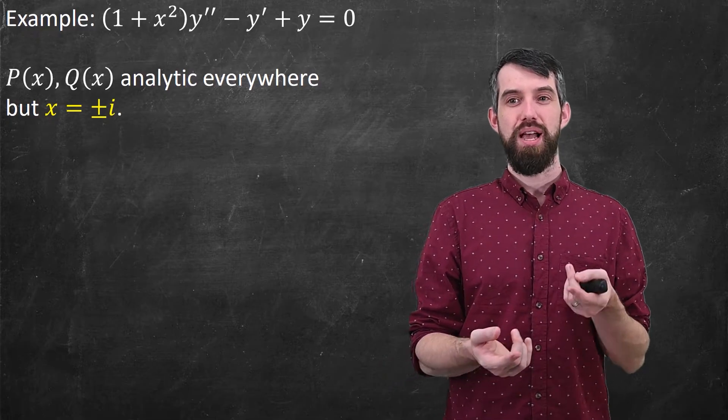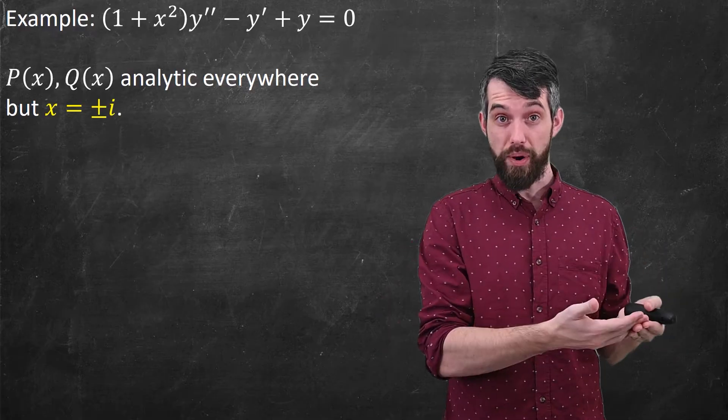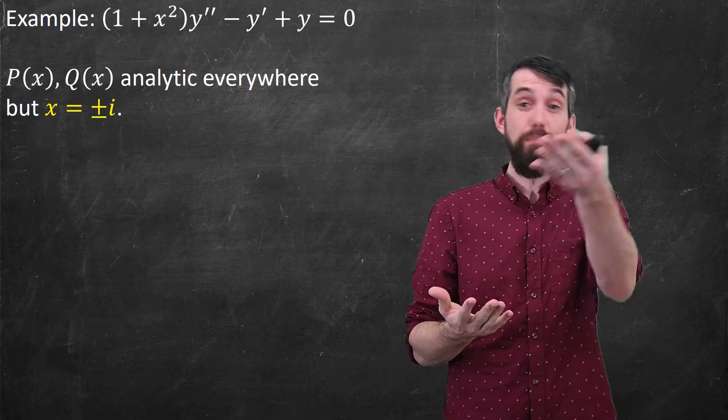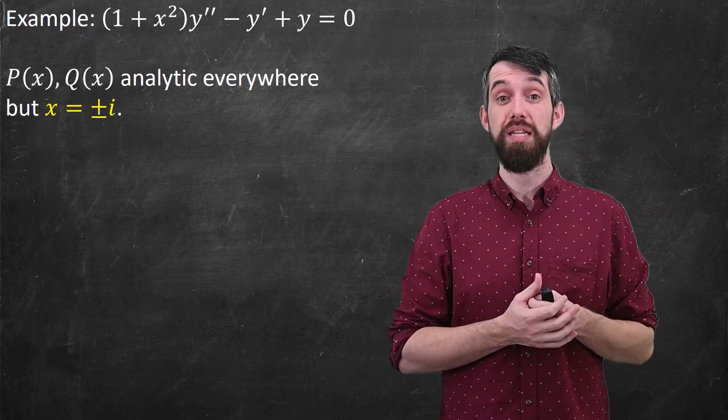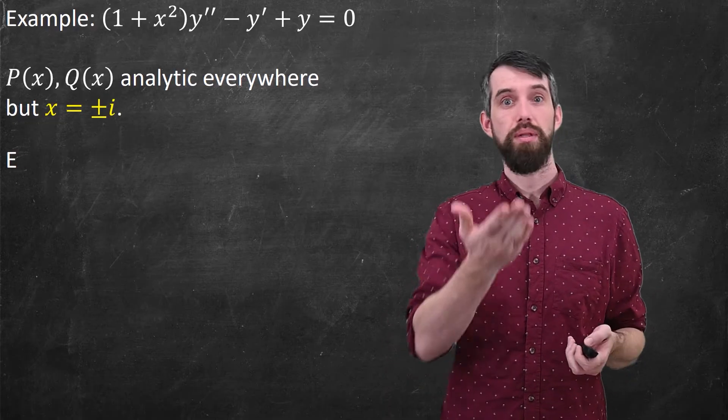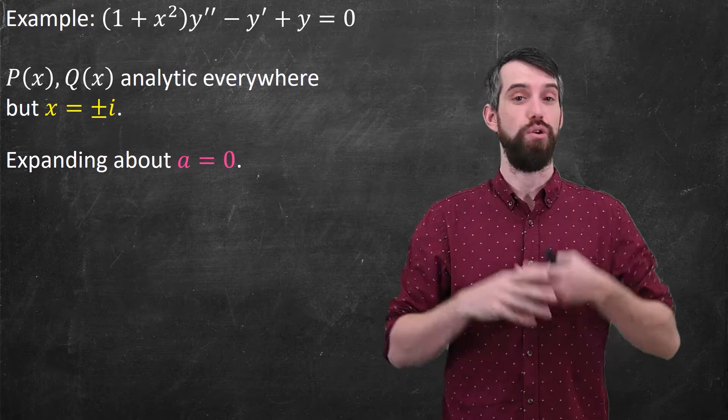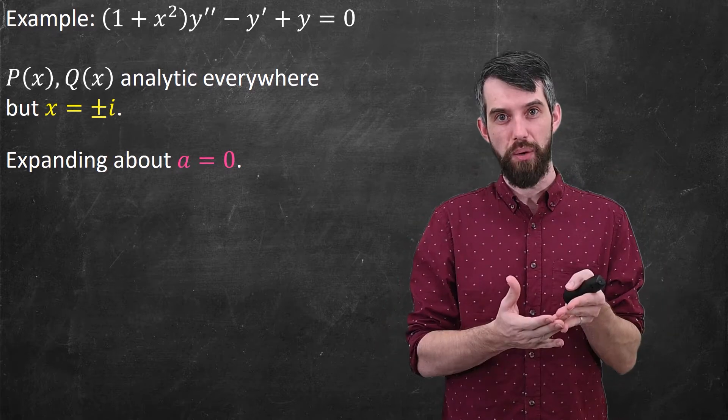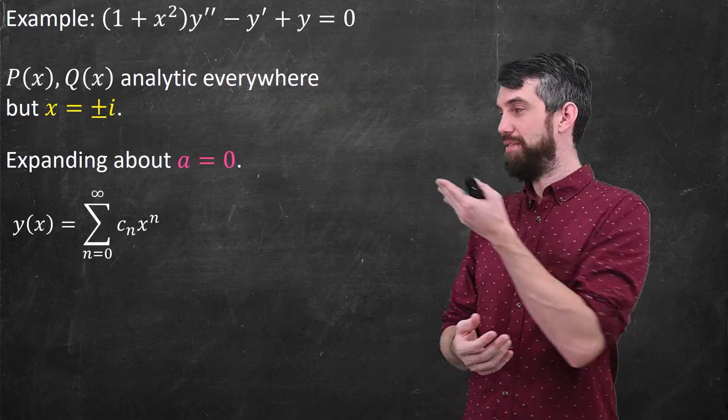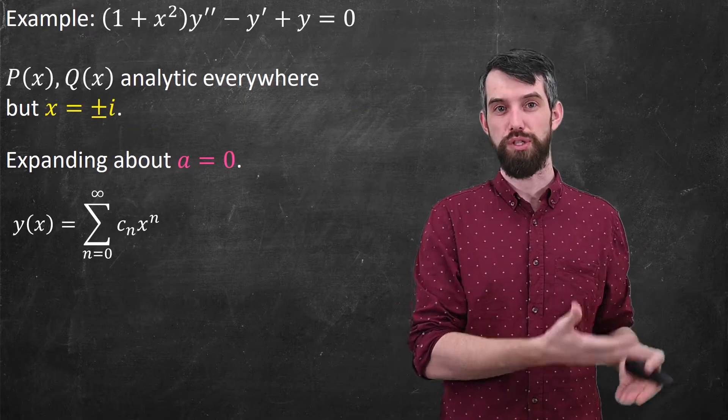So notice here that I'm allowing complex numbers. That is, my singular points could be complex values. They might be real numbers as well, in which case it's a little bit easier to deal with, but they could be complex as in this case. Okay, so let me try to expand about a equal to 0. So I'm not looking near i or minus i. I'm looking near 0. And then I'm going to imagine that I have some power series.